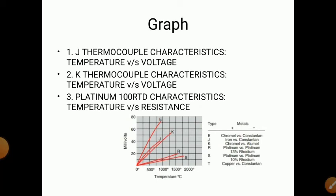Three graphs need to be plotted: J type thermocouple characteristics (temperature vs. voltage), K type thermocouple characteristics (temperature vs. voltage), and platinum RTD characteristics (temperature vs. resistance). The RTD used is the Platinum 100 RTD, meaning it has a platinum wire with an initial resistance of 100 ohm.